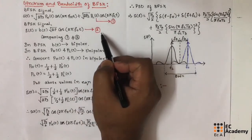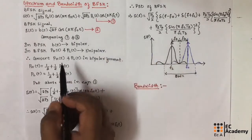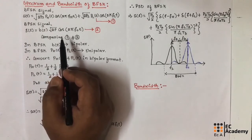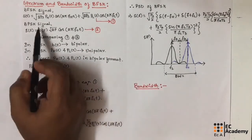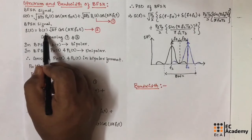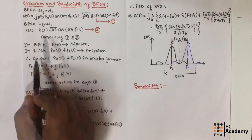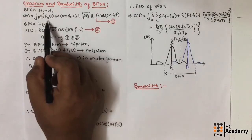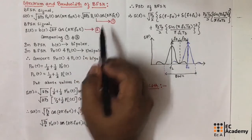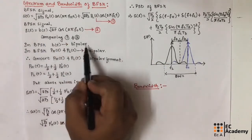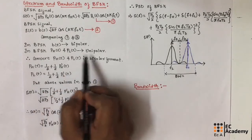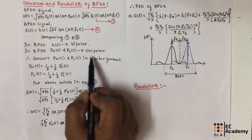If we compare equation 1 and equation 2, we observe that both equations are the same. So in BPSK, we are using b(t), and in BFSK, we are using ph(t) and pl(t). Here, b(t) is bipolar and ph(t) and pl(t) are unipolar.